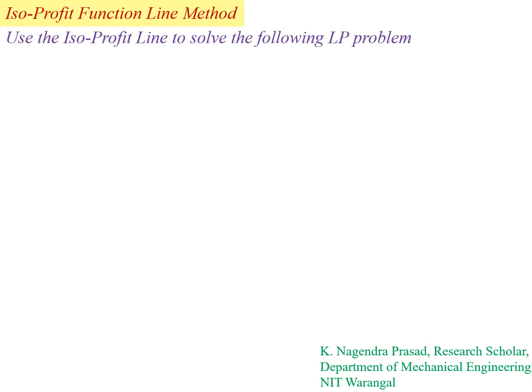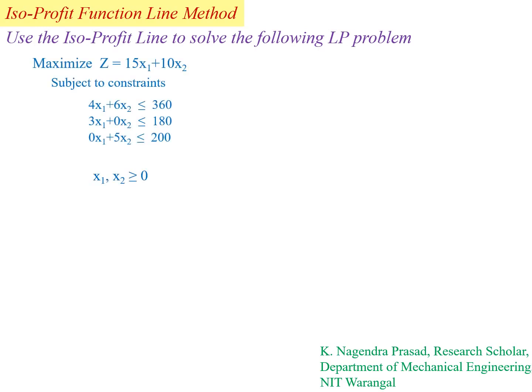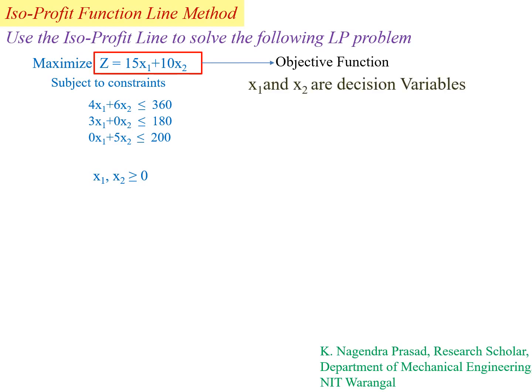Use the isoprofit line to solve the following linear programming problem: maximize Z equal to 15x1 plus 10x2, subject to constraints 4x1 plus 6x2 less than or equal to 360, 3x1 less than or equal to 180, 5x2 less than or equal to 200, and x1, x2 greater than or equal to zero. Here Z = 15x1 + 10x2 is the objective function and x1, x2 are the decision variables.